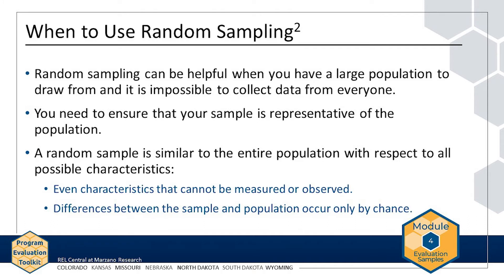Random sampling can be helpful when you have a large population to draw from and it is impossible to collect data from everyone. The representative sampling activity in Chapter 1 demonstrates how difficult it is to obtain a sample that is representative of an entire population with respect to many characteristics. Furthermore, if the individuals in your sample are not randomly sampled, they may differ from individuals not in your sample in unknown and unobservable ways. Random sampling can ensure that your sample is similar to the entire population with respect to all possible characteristics, even characteristics that cannot be measured or observed.